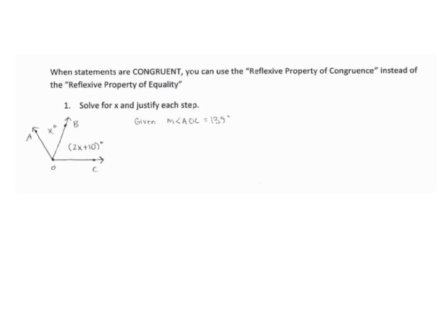When statements are congruent, you use the reflexive property of congruence — though just writing reflexive is okay. When you have equal signs, you use property of equality. So number one, we're going to solve for x and justify each step. Remember, always mark your diagram.